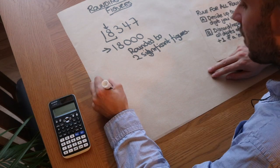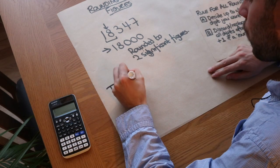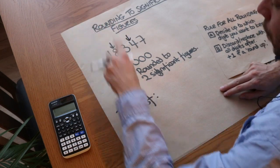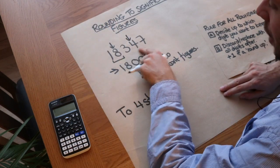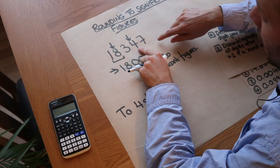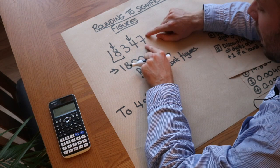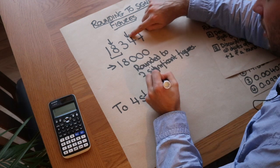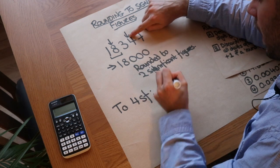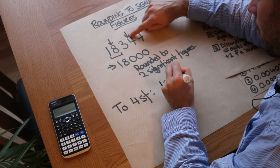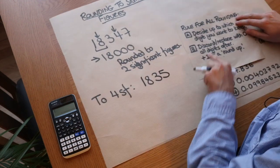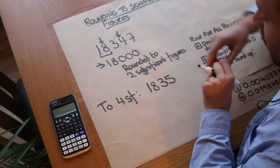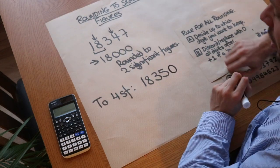If I wanted 18,347 to four significant figures — you can write 4sf for short — we keep up to the fourth digit, then check the digit after. Is it greater than or equal to five? Yes it is, so that four goes up to five, giving us 1,835, and then we replace the remaining digits with zero. So the units digit becomes zero, giving 18,350.